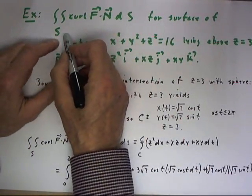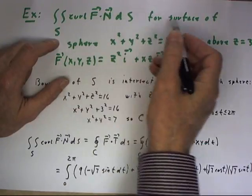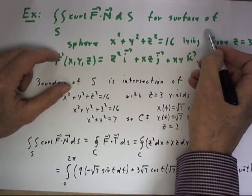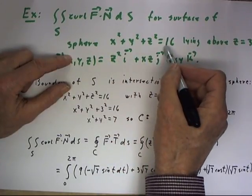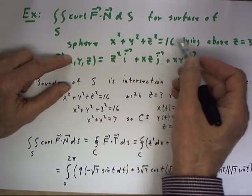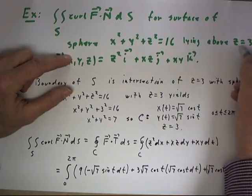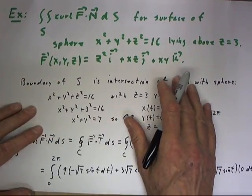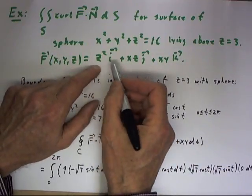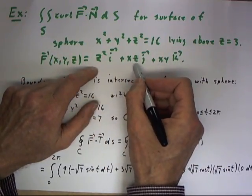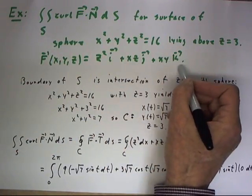Let's say we want to find the integral of curl F dot n for the surface consisting of the sphere x squared plus y squared plus z squared equals 16, the part of that sphere that lies above z equals 3, and our function F(x,y,z) is z squared i plus xz j plus xy k.